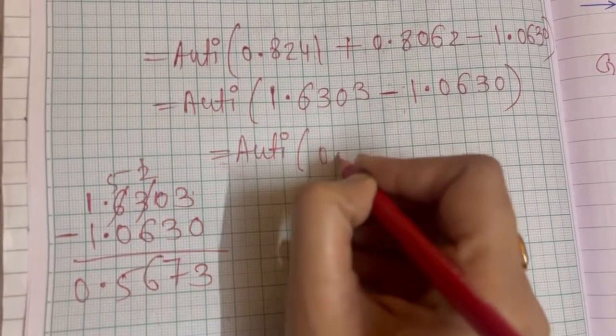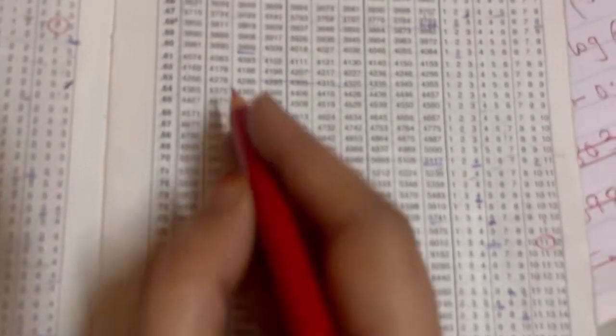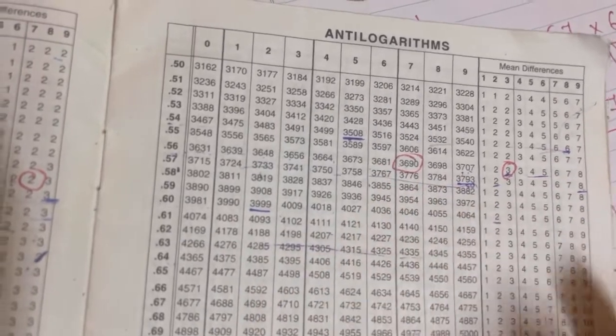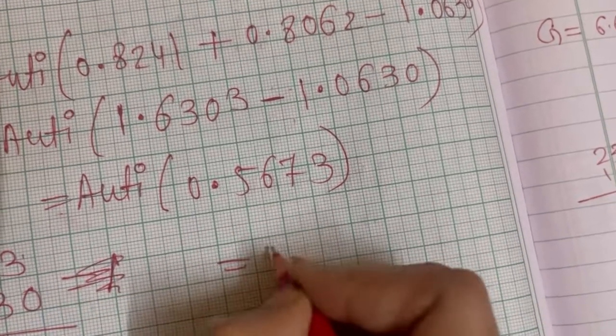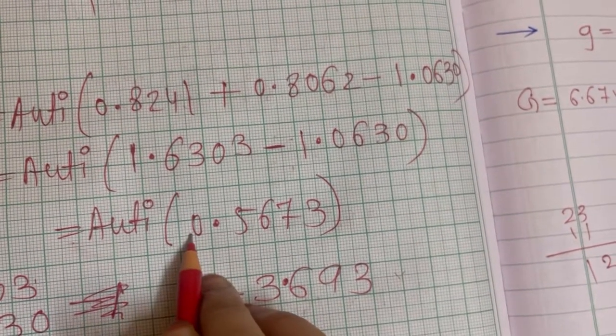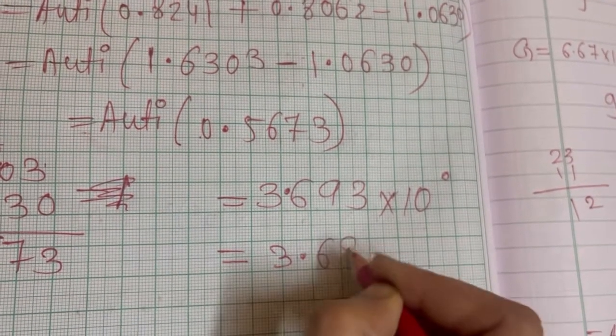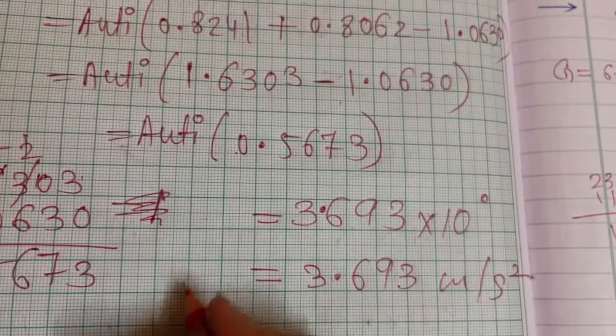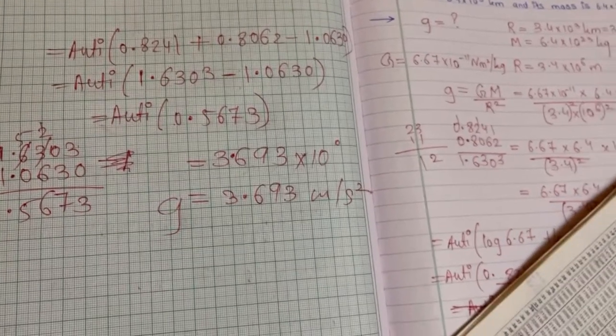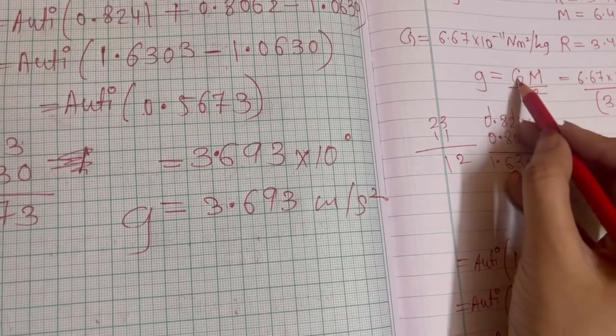Finding antilog of 0.5673: looking up 567 with difference 3, we get 3693. After one digit, we place the decimal point: 3.693 × 10⁰ = 3.693 m/s². This is the acceleration due to gravity on the surface of Mars. The correction took only 2-3 minutes, fixing the mistake from using GM/R instead of GM/R².